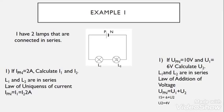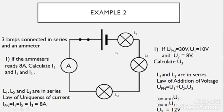If UPN equals 10 volts and U1 equals 6 volts, calculate U2. They are in series and the voltage is additive, so we apply the law of addition of voltage: UPN equals U1 plus U2. Therefore 10 equals 6 plus U2, which gives U2 equals 4 volts.